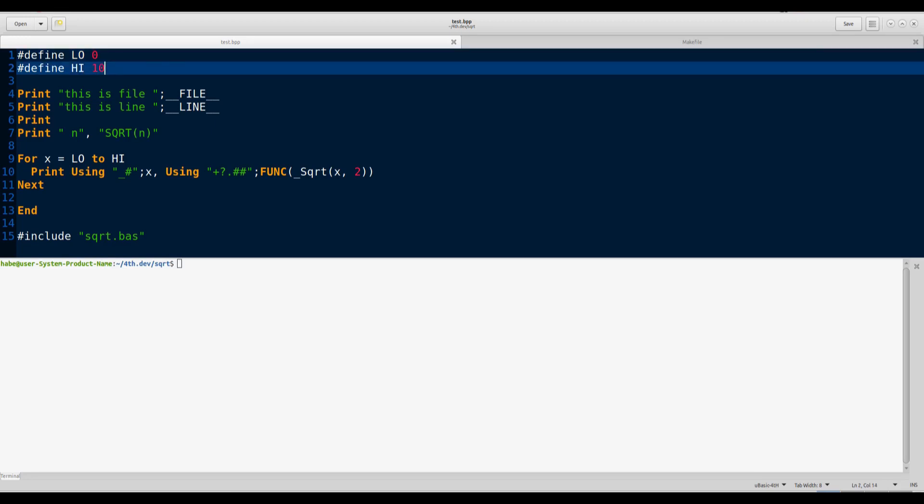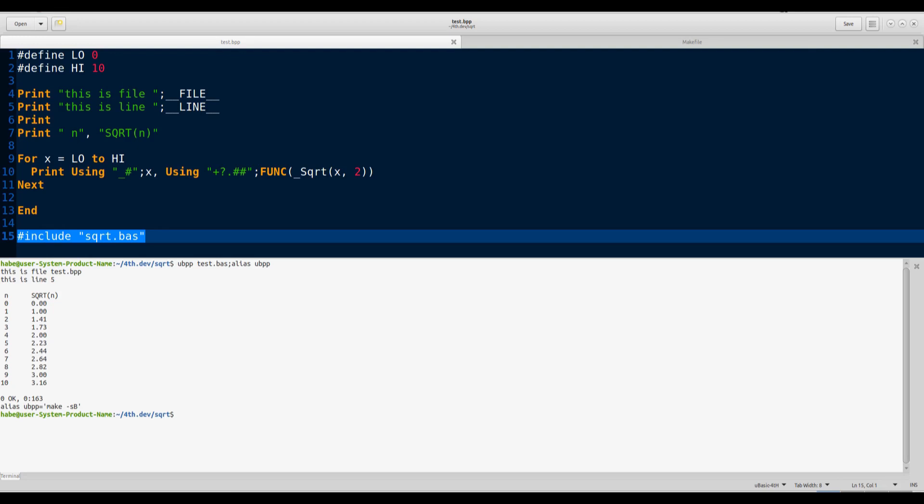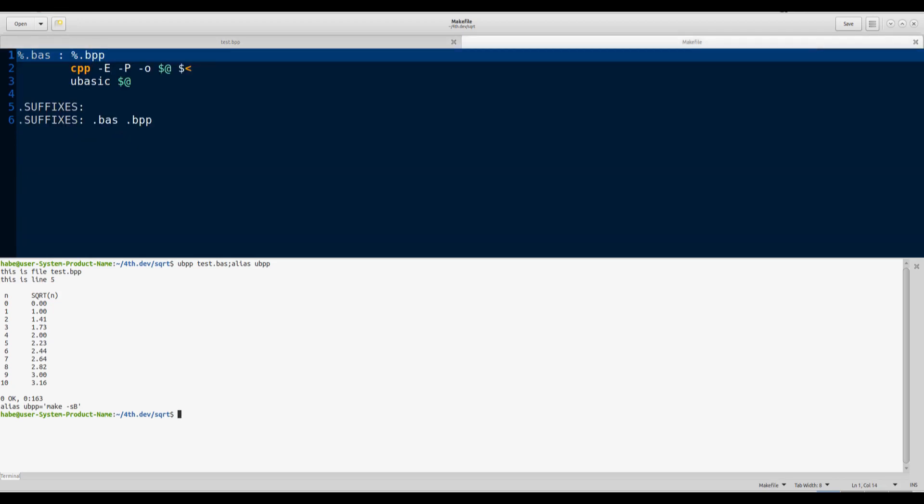Here's the program. It defines two constants and includes a square root function. Now let's run it. And yes, it runs. So, did I get busy last night? No. The whole thing consists of a tiny makefile and one alias. That's all.